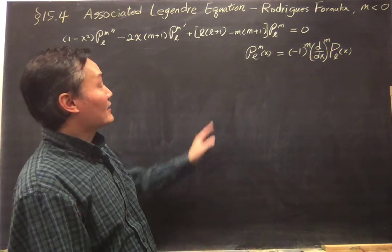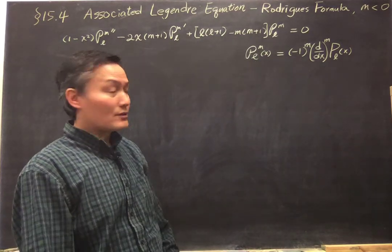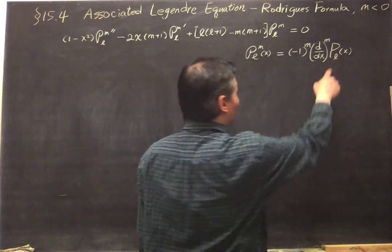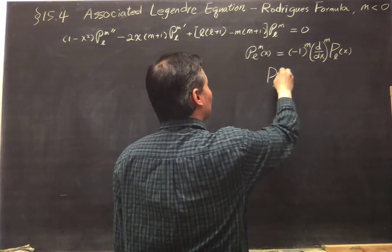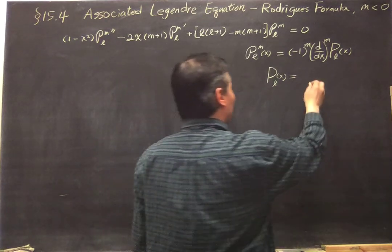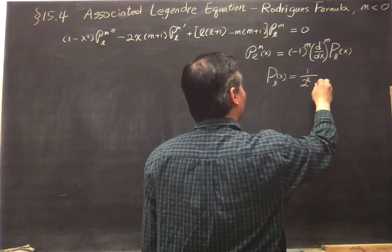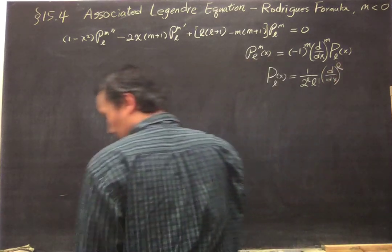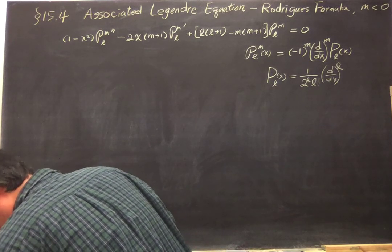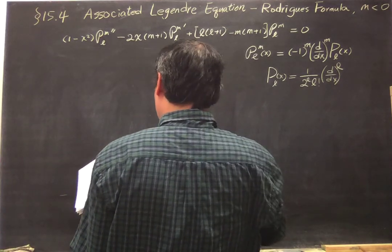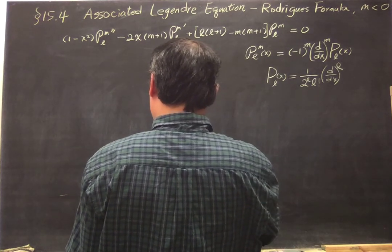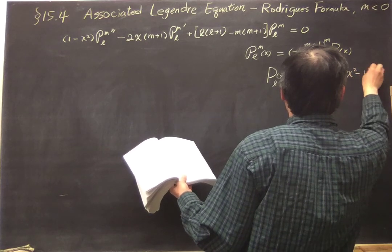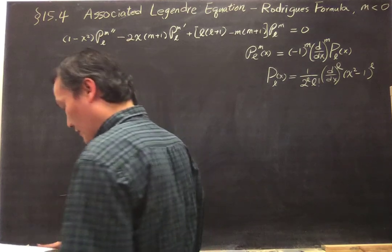We want to extend the formula for negative m. To do that, we'll use the Rodriguez formula for the Legendre polynomial P_L. By the Rodriguez formula, P_L has some constant in front — by convention it's 1 divided by 2^L times L factorial — and then taking the L-th derivative of (x² - 1)^L. This is the Rodriguez formula.